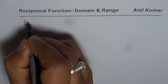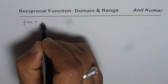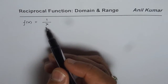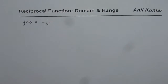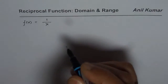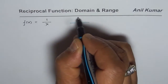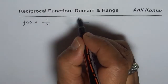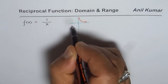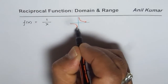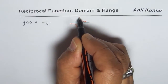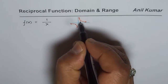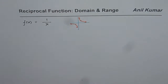A reciprocal function we could write in general as f of x equals 1 over x, or x to the power of minus 1. That is the reciprocal function and as you know the graph of this function — let me sketch a small one here — it has horizontal and vertical asymptotes, and it is always decreasing. Two important points are minus 1, minus 1 and 1, 1.